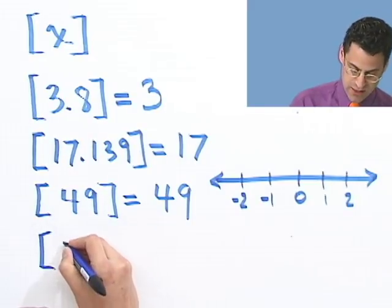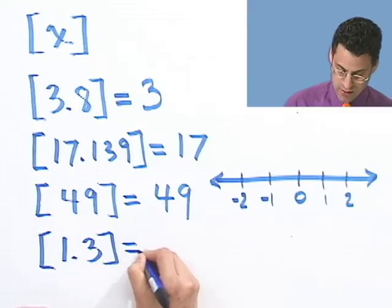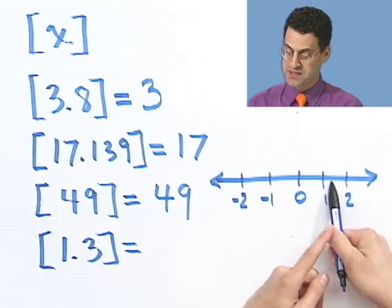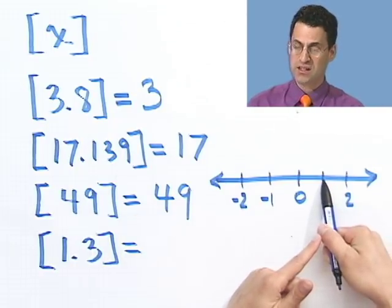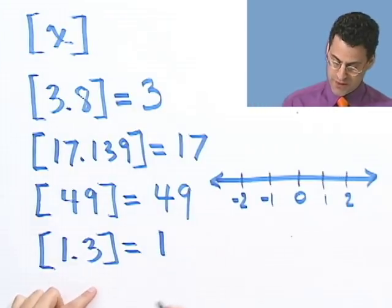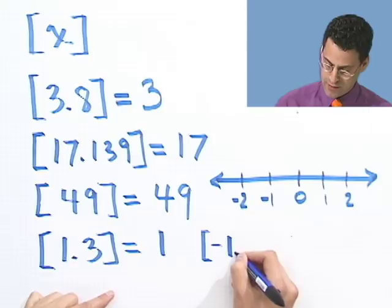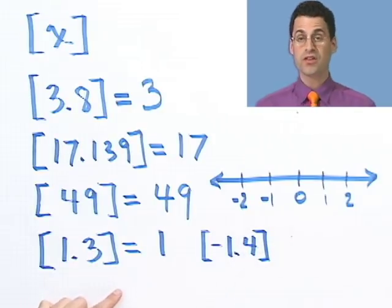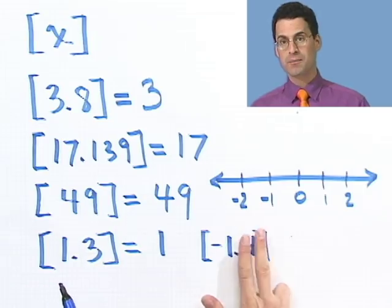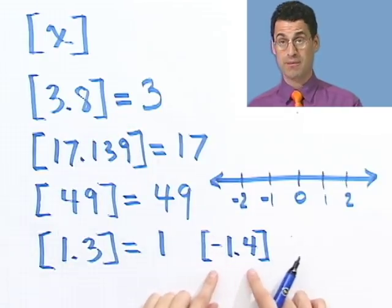As you move to the right on the number line, things get larger. If you remember that, you'll be fine. Let's do one last positive example: 1.3. What's the greatest integer function of that? Well, 1.3 is located right here on the number line, and I keep sliding to the left until I hit my first integer — that's the biggest integer less than this number, which is 1. If you remember that procedure, you won't get messed up with the negative ones. For example, minus 1.4: a tempting but wrong answer is to just lop that off and say minus 1 — but that's following a method for positive numbers without thinking about what's actually going on.